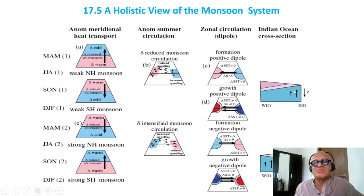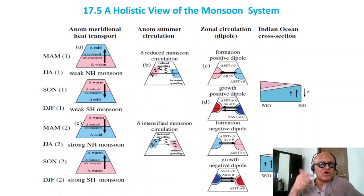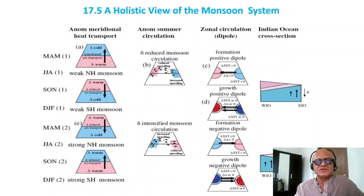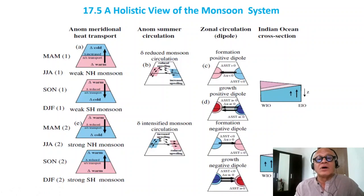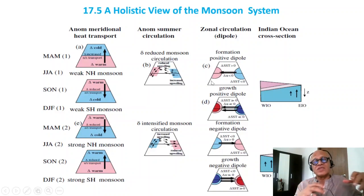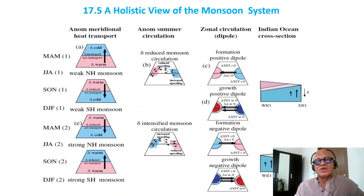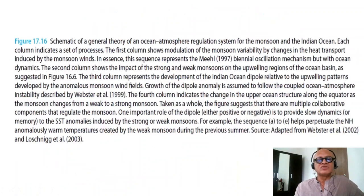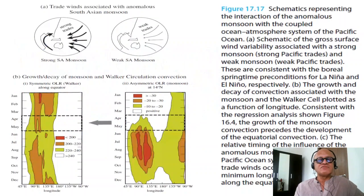One can look at the relation between thermocline depth and SST anomalies as an indicator of their interactions. Such a figure is provided in a paper by Annamalai and others — which included me as well — and you can see that in the eastern region there is a reaction between thermocline anomalies and SST anomalies. There is also a strong interaction in the southwestern dome we talked about, where the thermocline shoals. This is the idea of how the coupled monsoon system works and also gives us the quasi-biennial timescales.